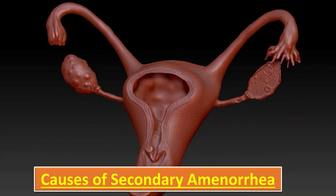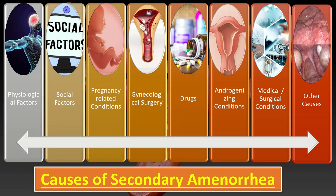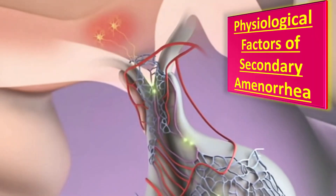There are basically 8 main causes of secondary amenorrhea. Those include: physiological factors, social factors, pregnancy-related conditions, gynecological surgery, different drugs, androgenizing conditions, medical and surgical conditions, and some other causes which we will discuss later.